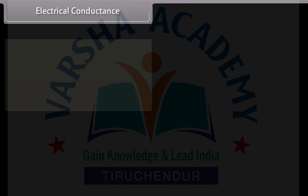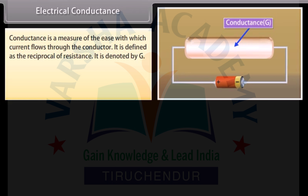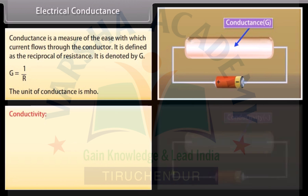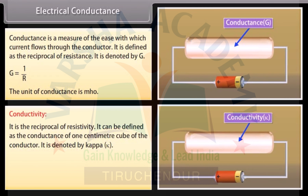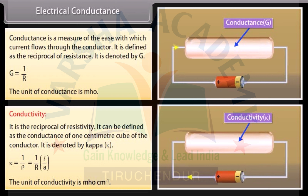Electrical conductance: A measure of the ease with which current flows through a conductor. It is the reciprocal of resistance: G = 1/R. The unit of conductance is mho. Conductivity (κ) is the reciprocal of resistivity, defined as the conductance of 1 cm³ of the conductor: κ = L/(RA). The unit of conductivity is mho cm⁻¹.